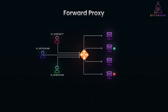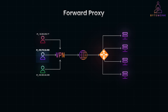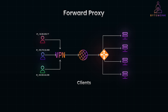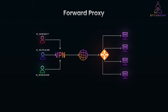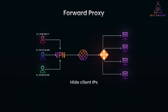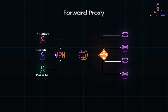A forward proxy is the opposite of a reverse proxy. It sits between the client and the internet, intercepting outbound requests from the client to external servers. Forward proxies are typically used for clients to manage and control their access to the internet or other external networks. They manage outbound traffic by controlling access, ensuring privacy, and optimizing bandwidth. They restrict content in schools and organizations, hide client IPs for anonymous browsing, and even web browsers like Chrome support proxy configurations to manage outgoing internet traffic.